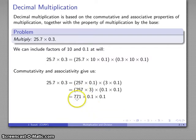Commutativity and associativity allows me to rewrite things this way. That gives me 771, 257 times 3. And then times 0.1 times 0.1 again. So that's going to give me my final product, 7.71.